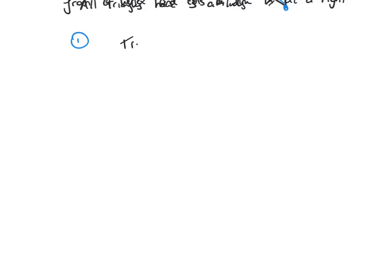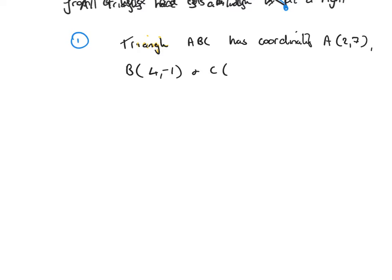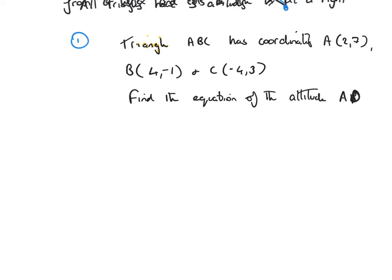Example one. Triangle ABC has coordinates A(2, 7), B(4, -1), and C(-4, 3). Find the equation of the altitude AD.